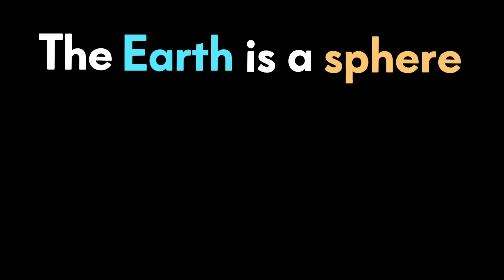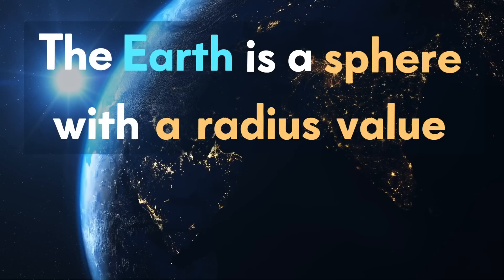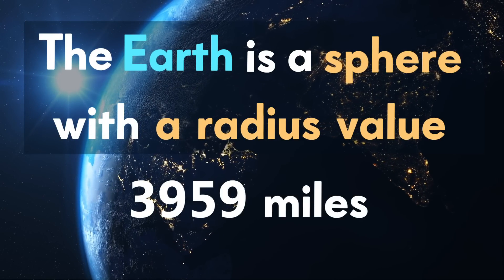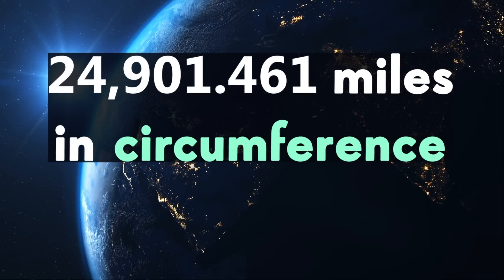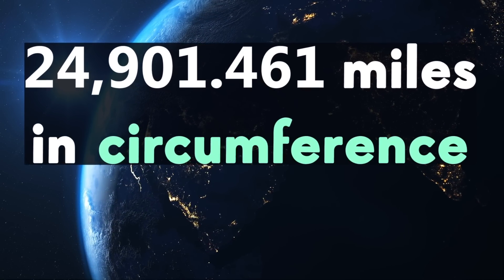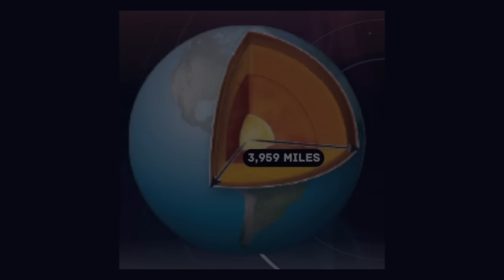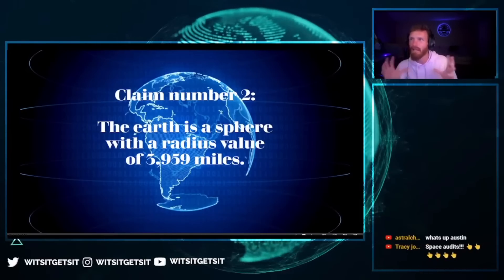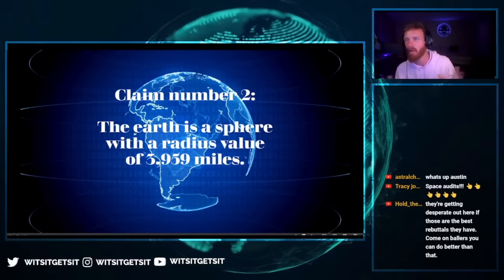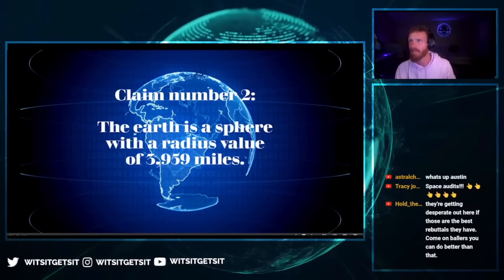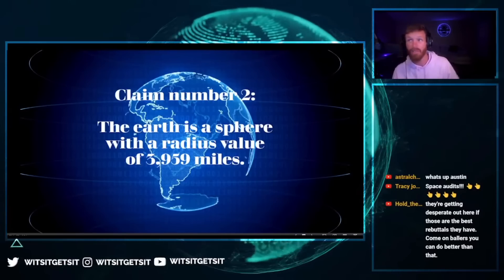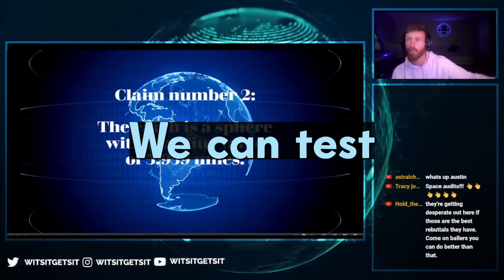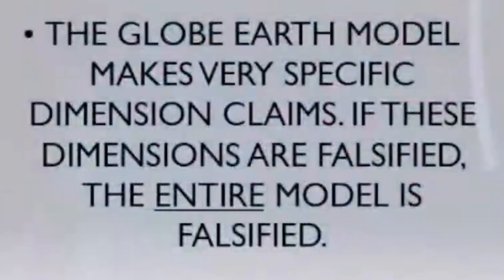Claim number two is that the earth is a sphere with a radius value of 3959 miles. Supposedly the earth is 25,000 miles in circumference — 24,901 to be specific — and the distance from the center to the edge is roughly 4,000 miles. It's a very specific size sphere, supposedly tilted, wobbling, and spinning through space. We can test that claim just like we tested the claim that the earth is moving. The globe earth model makes very specific dimension claims; if these dimensions are falsified, the entire model is falsified.